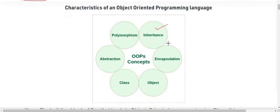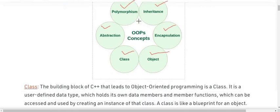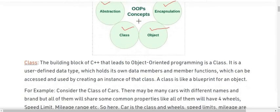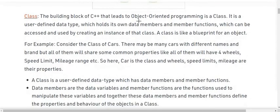Some characteristics of object-oriented programming languages: the most important ones are inheritance, encapsulation, objects, classes, abstraction, and polymorphism. We will see each of them in detail one by one. First of all, we have classes — the building block of C++ that leads to object-oriented programming.